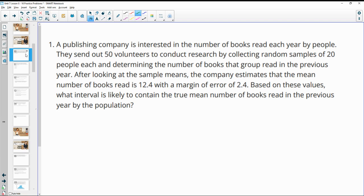Number one, a publishing company is interested in the number of books read each year by people. They send out 50 volunteers to conduct research by collecting samples of 20 people and determining the number of books that the group read in the previous year. After looking at the sample means, the company estimates that the mean of the number of books read is 12.4 and the margin of error is 2.4. Based on these values, what interval is likely to contain the true mean number of books?